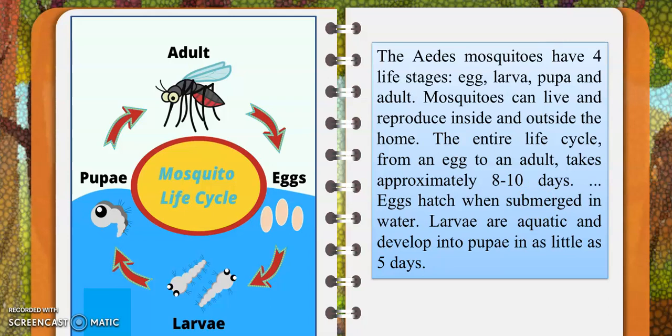Within 10 days, we have a batch of adult mosquitoes ready and ready to attack us. Eggs hatch when submerged in water, so we must ensure that we do not let water recollect or get stale, because mosquitoes love dirt and unhygienic places. Larvae are aquatic and develop into pupae in as little as 5 days — they don't even take a week to grow.